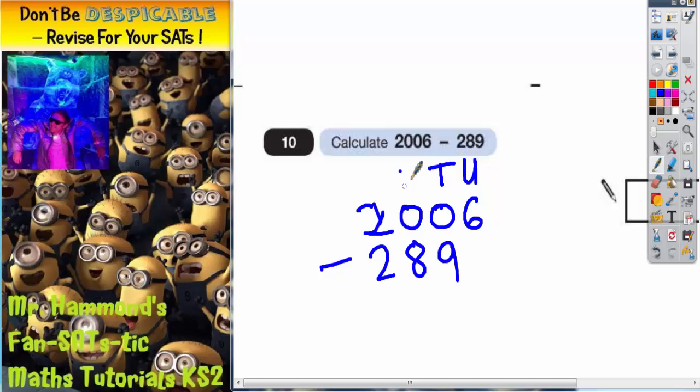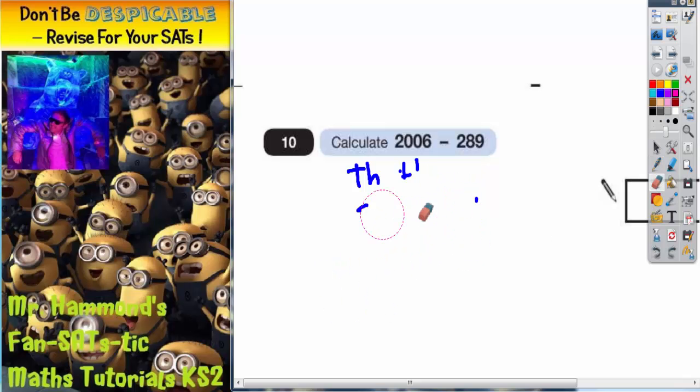And as you can see with the 289, this actually is 200 and we've got it in the incorrect column. So make sure we'll start again. Make sure everything goes in the correct columns.